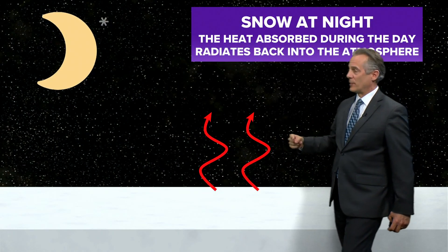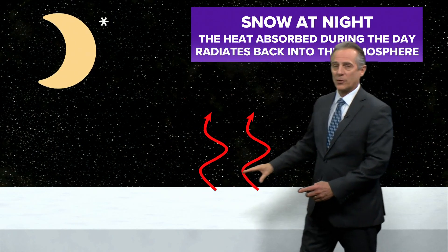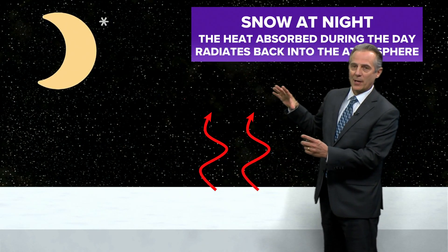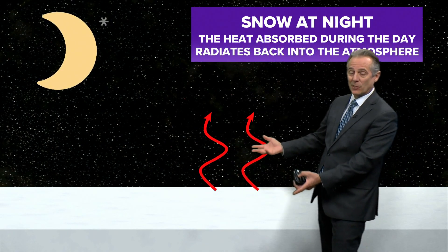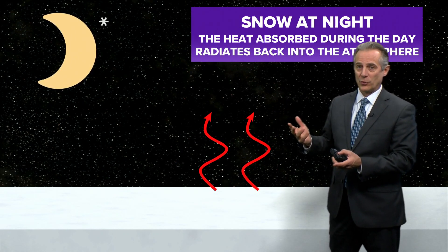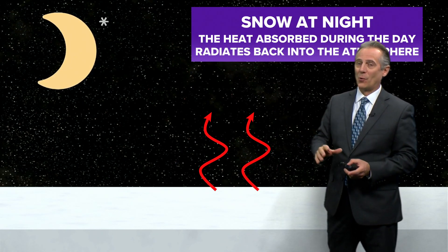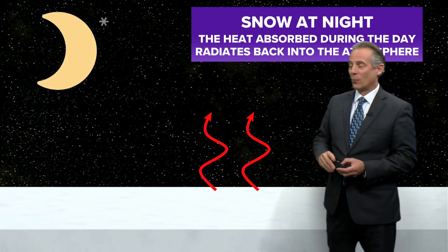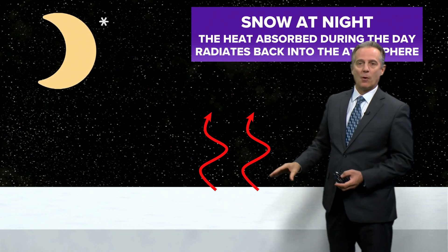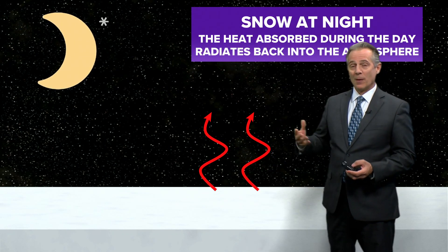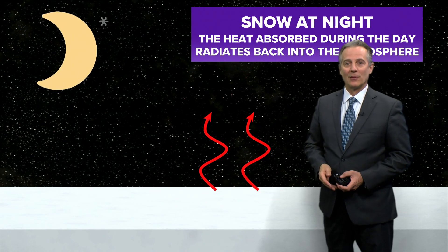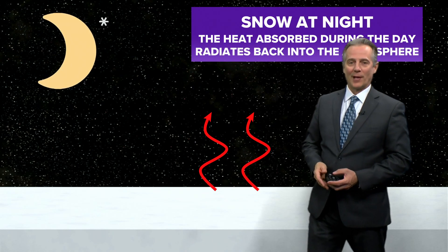It also happens at night. When you have fresh snow cover and clear skies at night, the heat loss is very, very high in the winter. So you can have very cold temperatures when you don't have any clouds around and you've got fresh snow on the ground. So that's a little bit about albedo. Thanks for coming to the Local 5 Weather Lab.